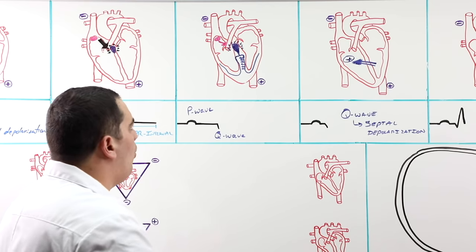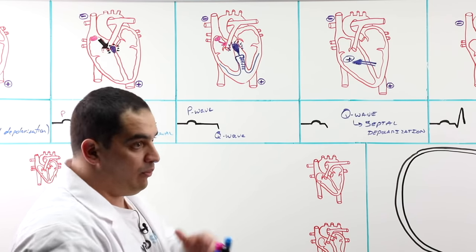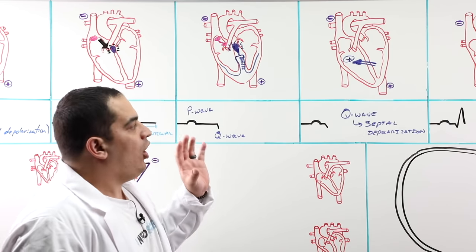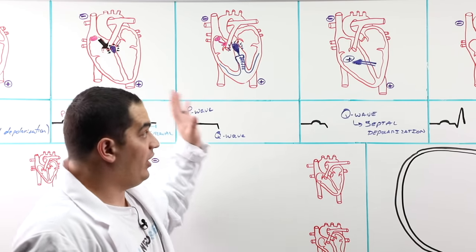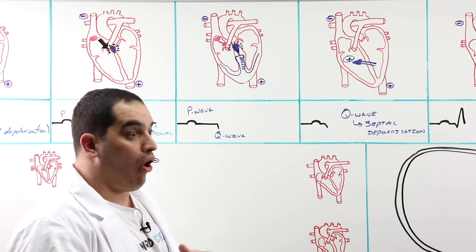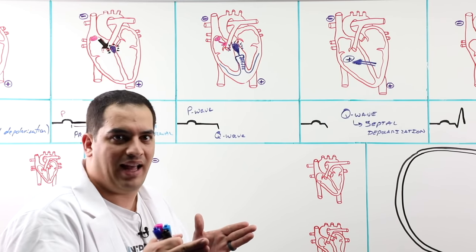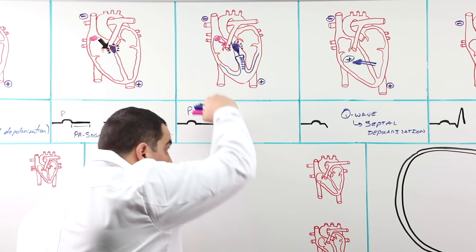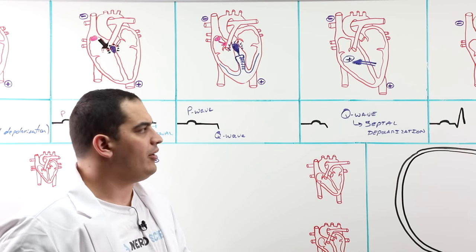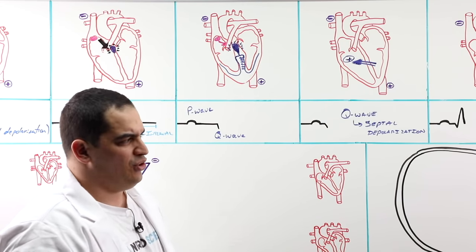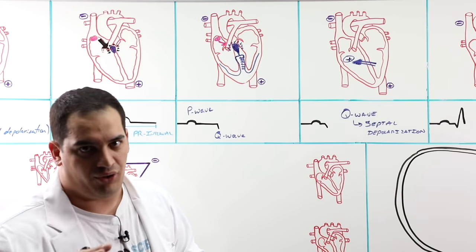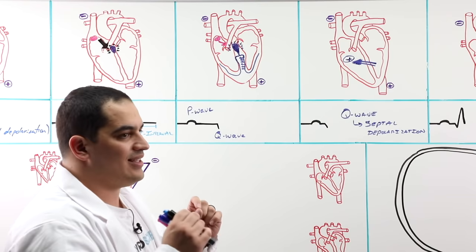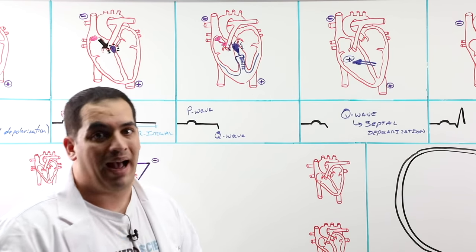Q waves are a normal physiological part of our EKGs. They can become pathological Q waves when they become very wide or very deep. The size of the Q wave determines whether it is physiological or pathological, and the location in which you find them also matters. Sometimes you may not even see Q waves in a 12-lead EKG.